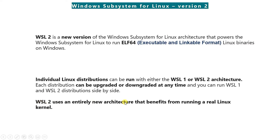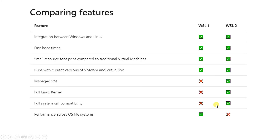The major improvement in WSL2 is that it uses an entirely new architecture and benefits from running a real Linux kernel. Comparing features, WSL1 was missing three things: a full Linux kernel, full system call compatibility, and managed VM support.